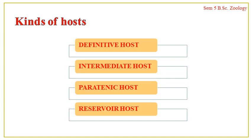The intermediate host, otherwise known as the secondary host, is the host in which the parasite spends its larval or asexual life. For the malarial parasite Plasmodium, the female Anopheles mosquito is the definitive host while the human is the intermediate host. For Wuchereria bancrofti, the human was the definitive host, while Culex mosquito is the intermediate host.